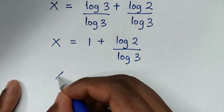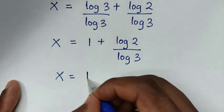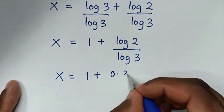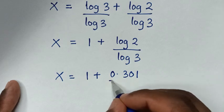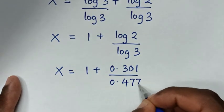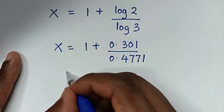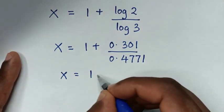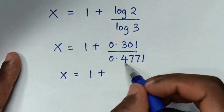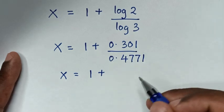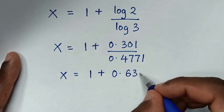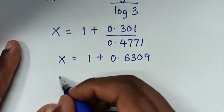Then it will be x is equal to 1 plus log of 2, which is 0.301, over log of 3, which is 0.4771. Then it will be x is equal to 1 plus 0.301 divided by 0.4771, which is 0.6309.